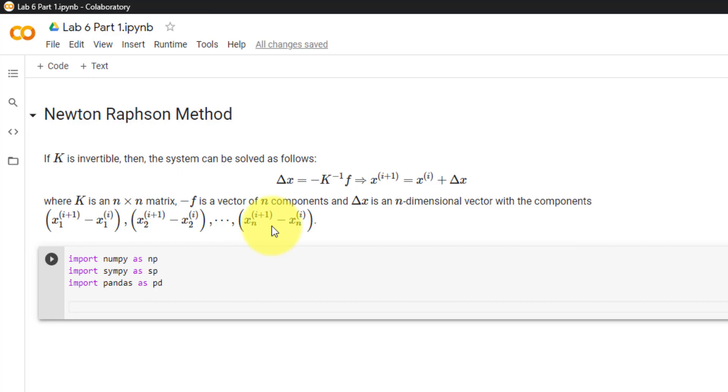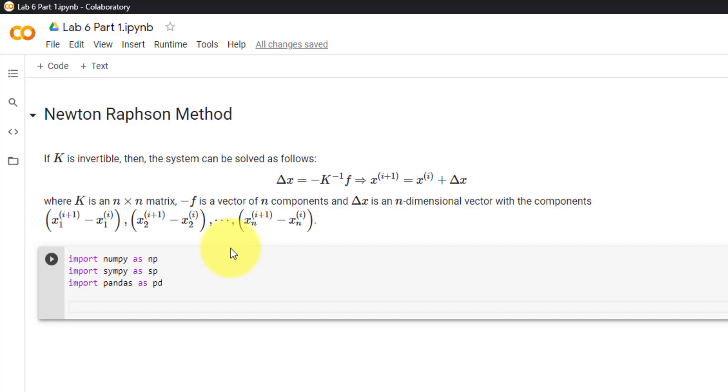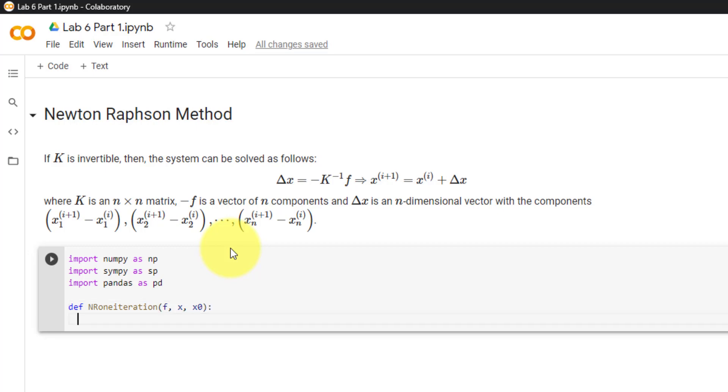First, we must define a function to return delta x, where delta x is equal to the inverse of negative K times f. Let's go ahead and call this function nr1iteration, with the inputs of the f vector, and x, which is a list of our symbols, and x0, which is a list of our initial guesses. Next, we will set a constant n equal to the length of f, which we will use later.